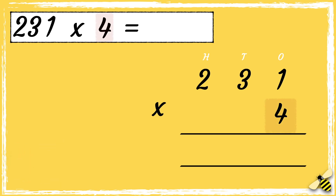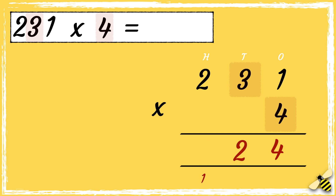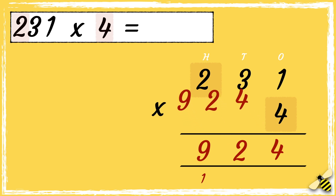First we multiply 4 by 1. So 4 times 1 is 4. Then we need to multiply 4 by 3 tens. 4 times 3 equals 12. We carry the one below in the hundreds column as it represents 100. So then we need to multiply 4 by 2 hundreds. So 4 times 2 is 8. We need to add the 1 in the hundreds column below, so 8 add 1 more is 9. So the answer is 924.